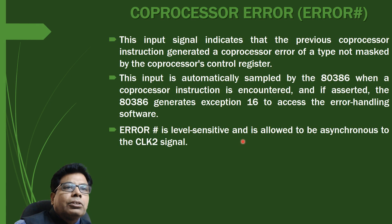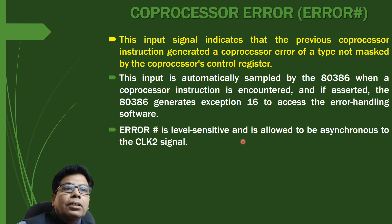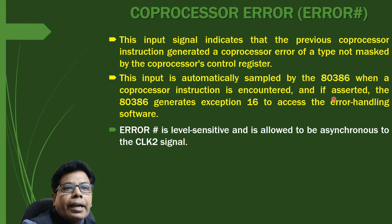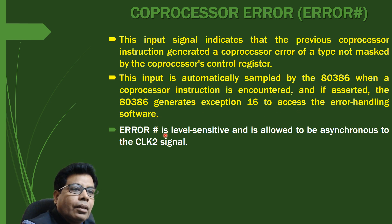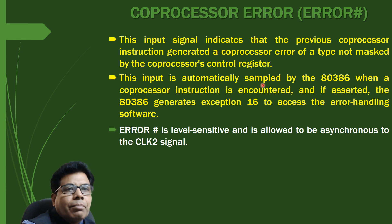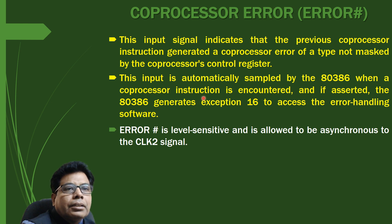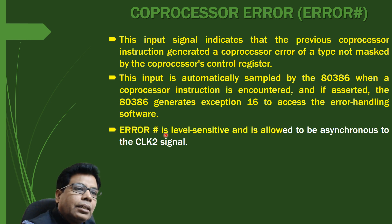The next signal is coprocessor ERROR. This input signal indicates that the previous coprocessor instruction generated a coprocessor error of a type not masked by the coprocessor's control register. This is automatically sampled by the 80386 when a coprocessor instruction is encountered, and if asserted, the 80386 generates exception 16 to access the error handling software. ERROR is active low, level sensitive, and is allowed to be asynchronous to the clock signal.